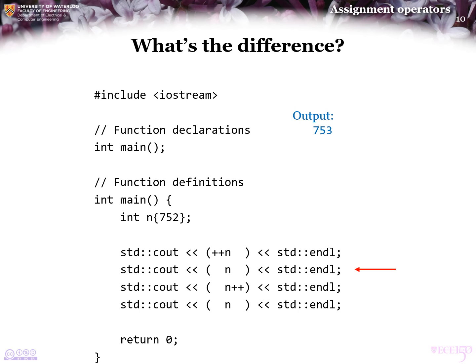At this point, the value of n is 753, and so this line will print 753 to the screen. n plus plus will add 1 to n, but it returns the original value of n. So now, the value returned by n plus plus, or the value that n plus plus evaluates to, is the original value, which is currently 753. So 753 is what is printed.